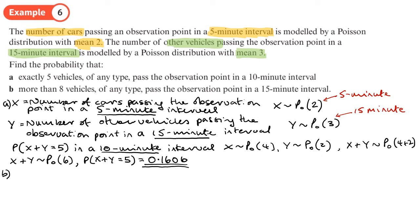Part (b): find the probability that more than 8 vehicles of any type pass the observation point in a 15-minute period. In 15 minutes, the rate for cars is 6 (2 per 5 min × 3 = 6), and for other vehicles it remains 3, as that was already given for 15 minutes.